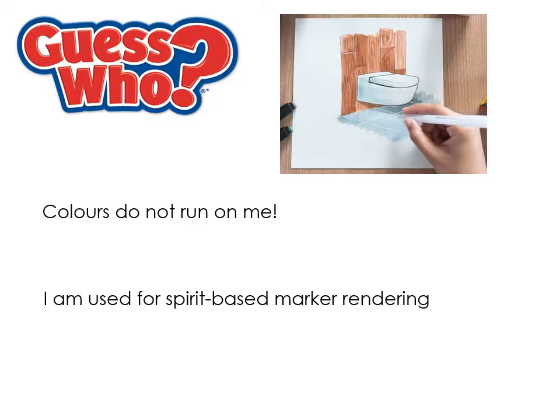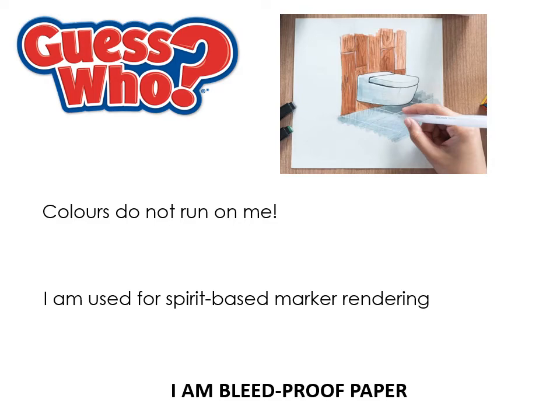Bleed proof paper is designed so that colours do not run on it. We don't use it much because it's expensive, but if you go on to do a design course at university — architecture, interior design — you'll typically use bleed proof paper with spirit markers. When you use spirit markers on normal cartridge paper they bleed and shift. This paper prevents that and also stops ink going through to the table underneath. It's specifically designed for spirit-based alcohol markers.